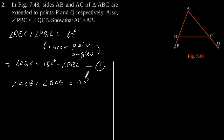Similarly, since they are also linear pair angles, angle ACB plus angle QCB equals 180 degrees. This gives angle ACB equals 180 degrees minus angle QCB. Let's call this equation 2. Now, as given in the question,